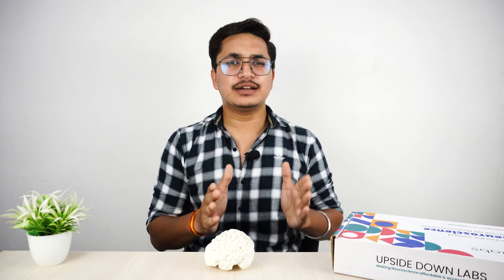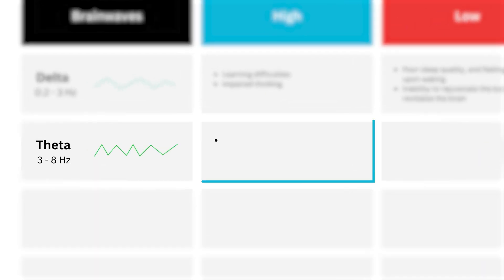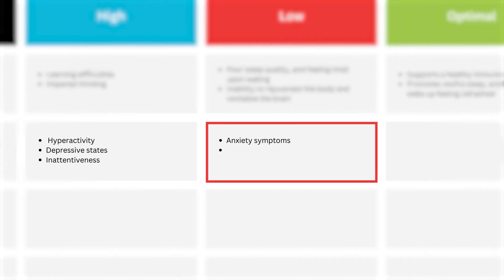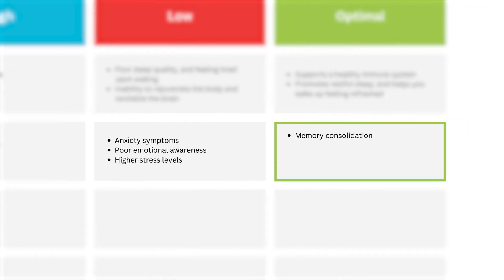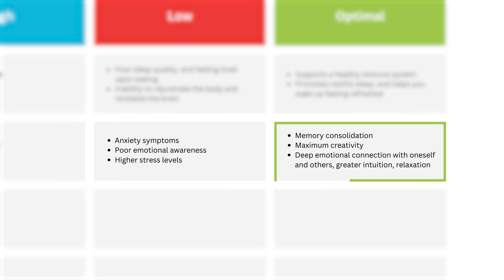The transition from engaging with your surroundings through the senses to focusing on inner body sensations is also tied to increased theta wave production. High levels of theta waves are associated with hyperactivity, depressive states, or inattentiveness. Low levels are associated with anxiety, poor emotional awareness, and high stress. The optimal level corresponds to memory consolidation during sleep, maximum creativity, deep emotional connection, great intuition, and relaxation.